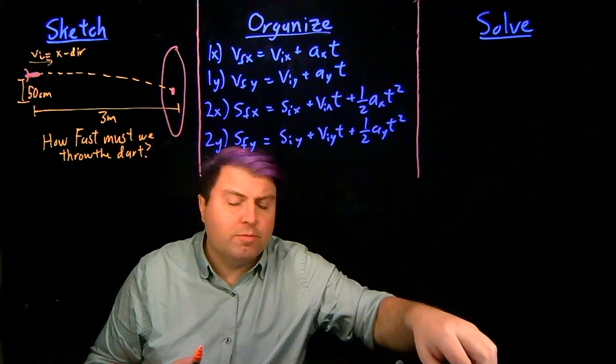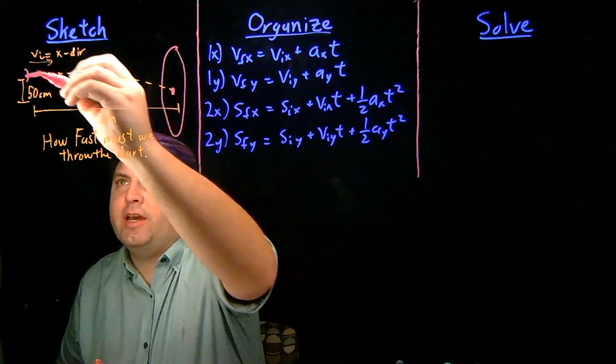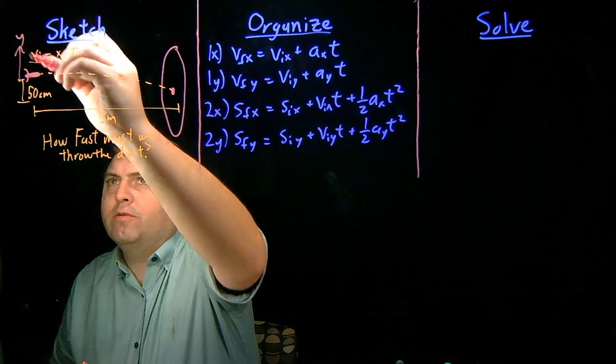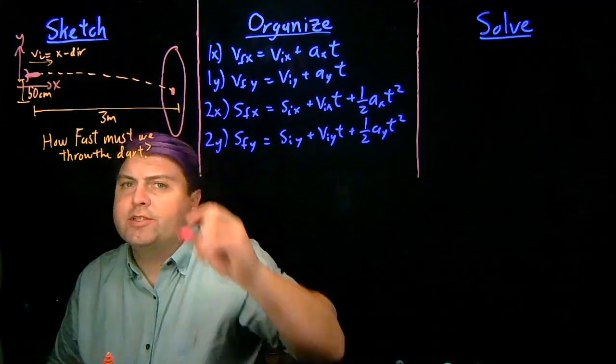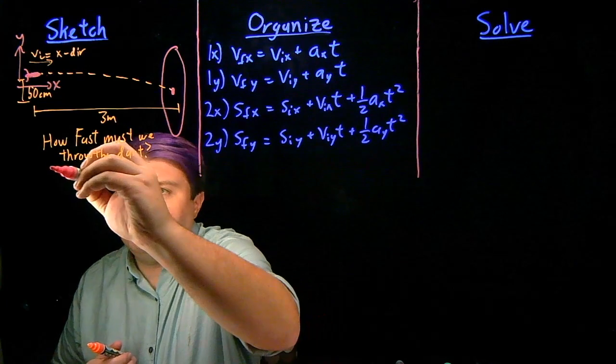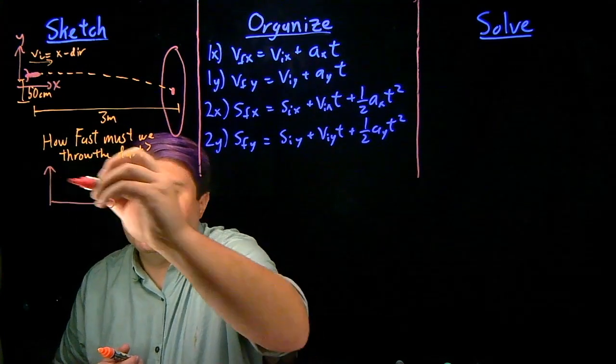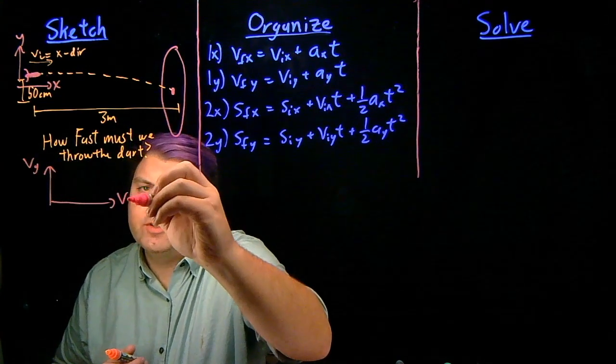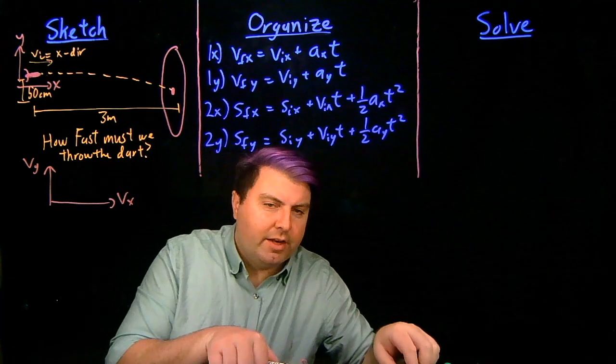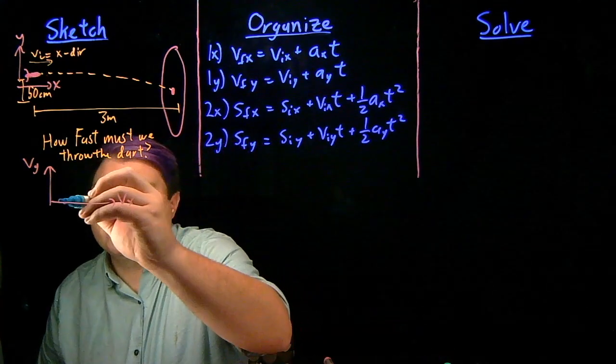So one thing to do would be to draw, this is a y versus x graph, would be to also draw a vy versus vx graph, and nicely enough for this, we're throwing our dart perfectly horizontally.